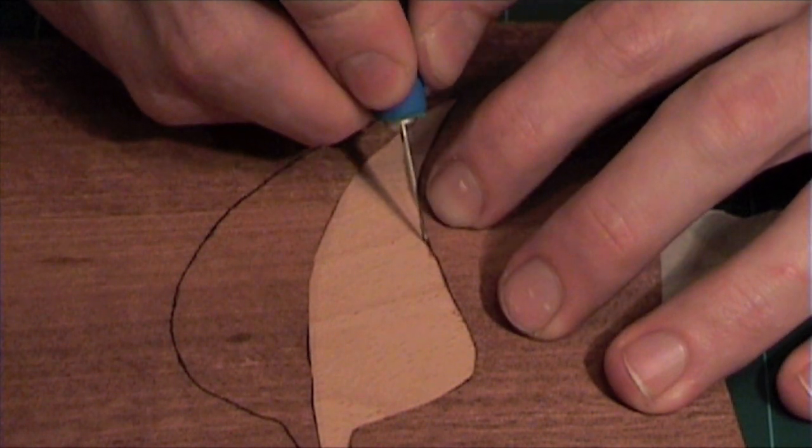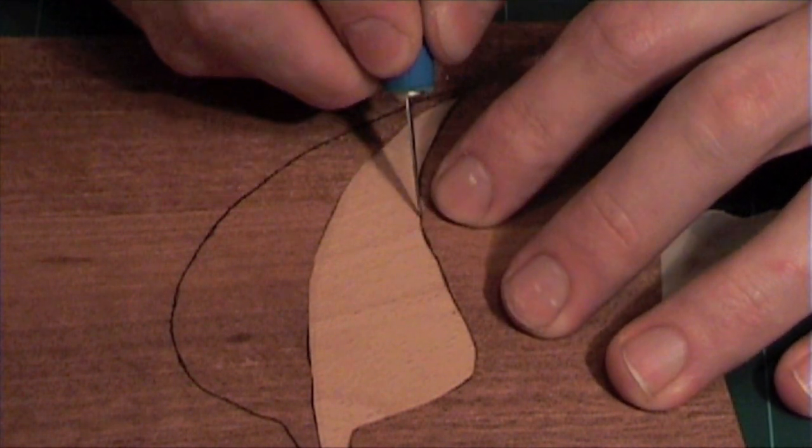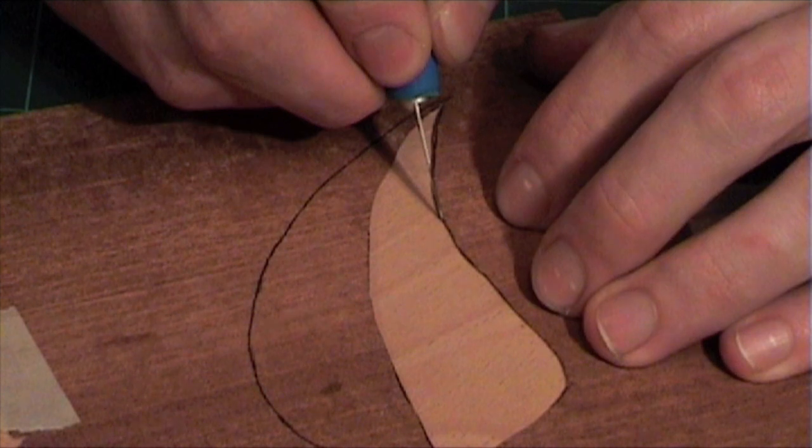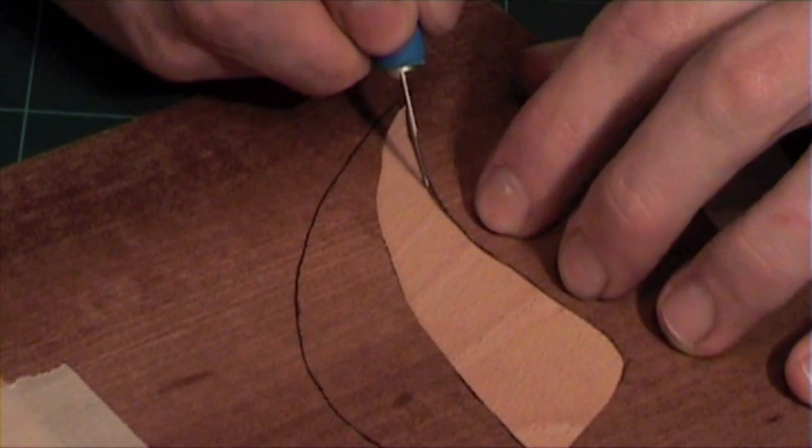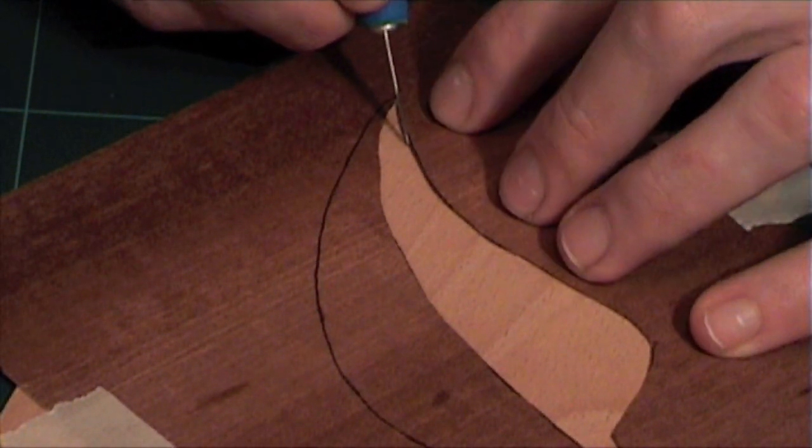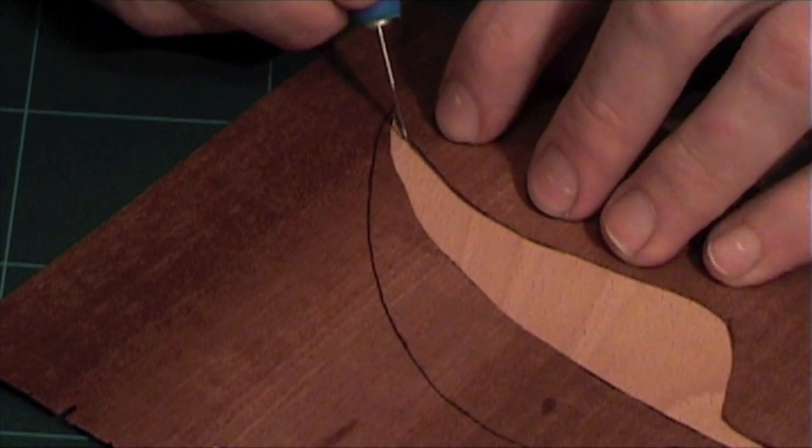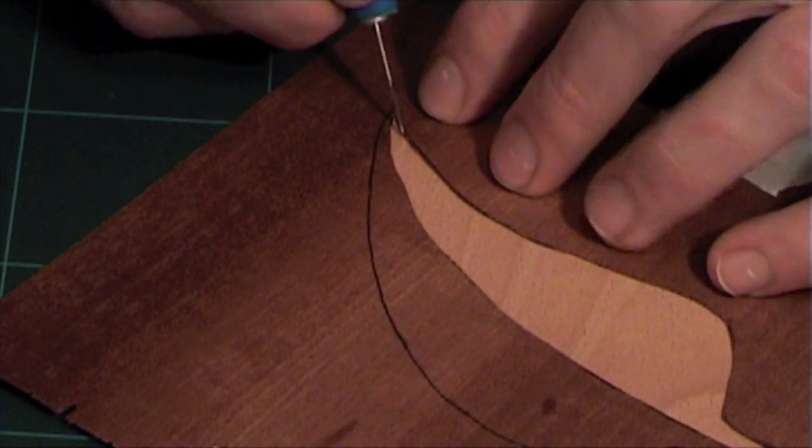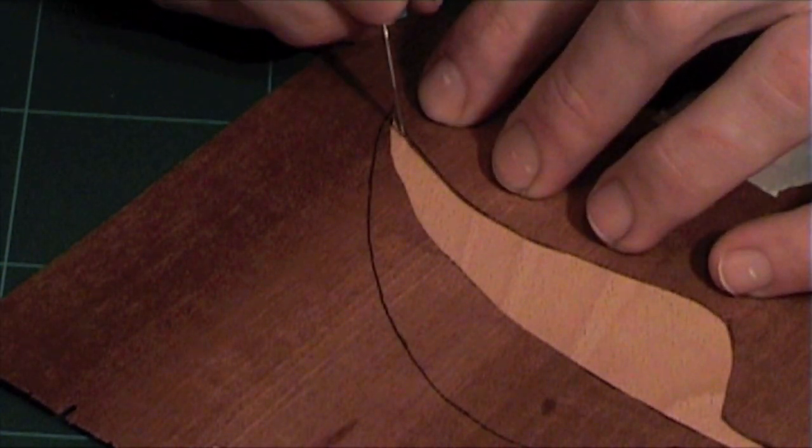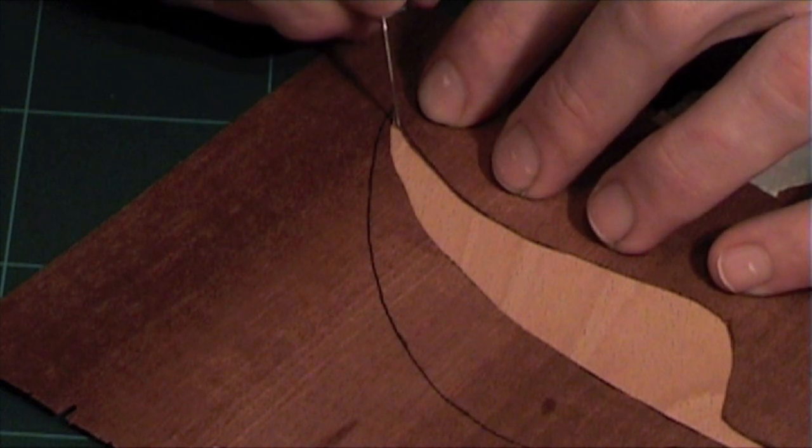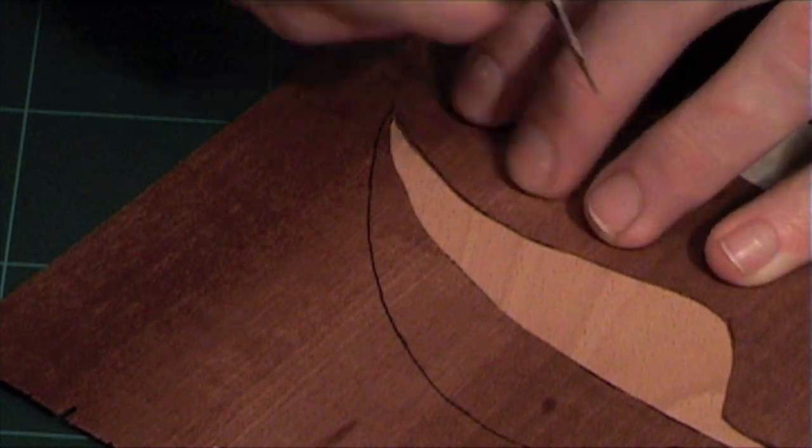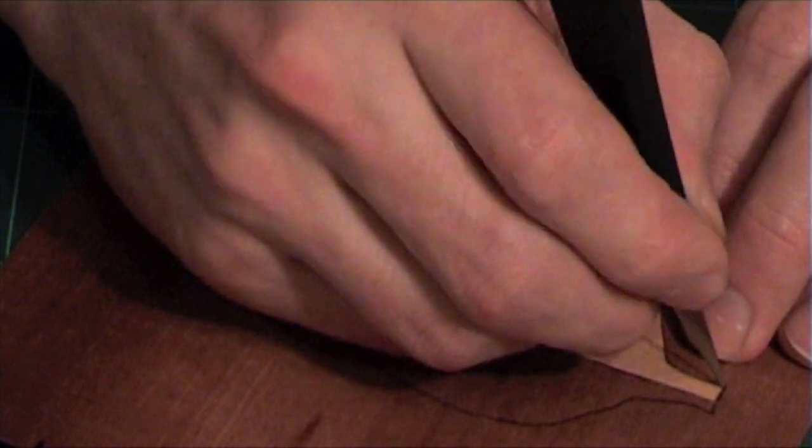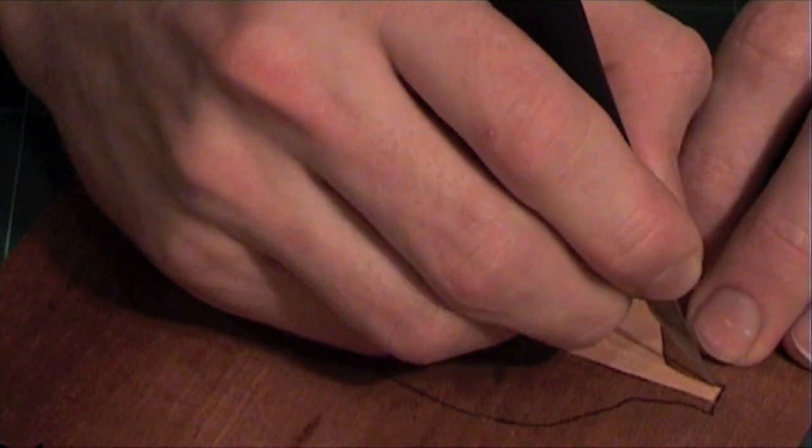Scribing along the window accurately is critical to the success of your marquetry. You should take your time with this step. Keep the knife upright and perpendicular to the veneer. You are not aiming to cut the veneer here, just to gently mark it, following the pattern you have already cut out.